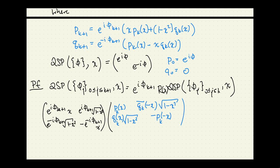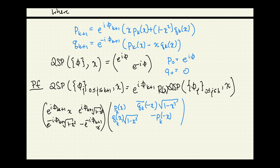If you check the bottom corner term, you have the same thing but with 1 minus x squared, e^{-i phi_k}, and Q-bar_k of minus x. That's what you get if you take P_k, take the conjugate, and substitute minus x. So in the bottom right corner you're getting something that looks like P_{k+1}-bar. This should confirm that this is indeed what I'm claiming.